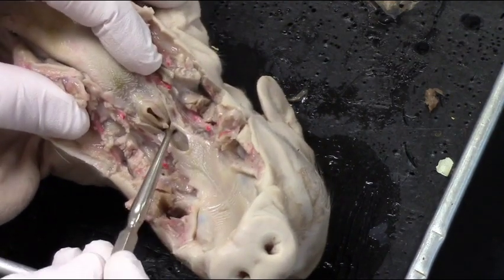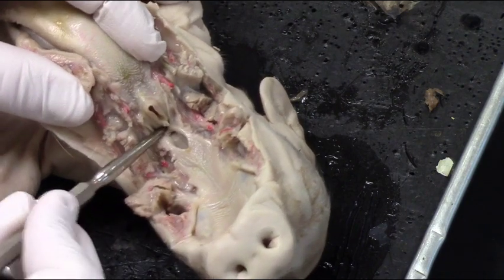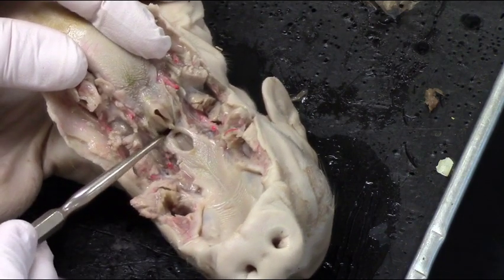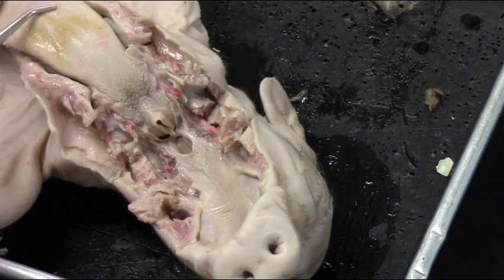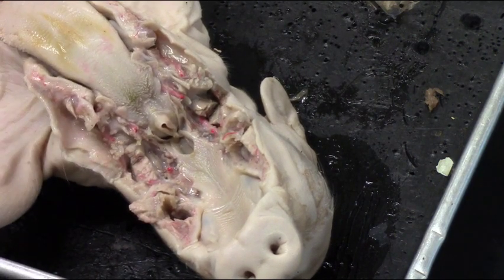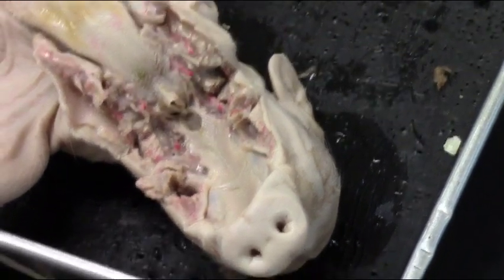So when the pig breathes in, the air goes through the nasopharynx into the glottis. That's the esophagus right there that my probe is in. The esophagus is where food goes after it passes over the tongue, over the epiglottis, and down.